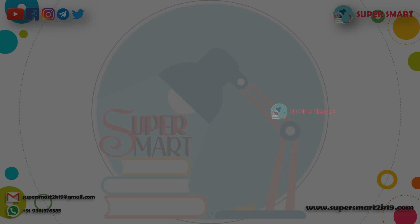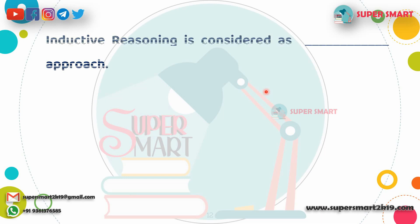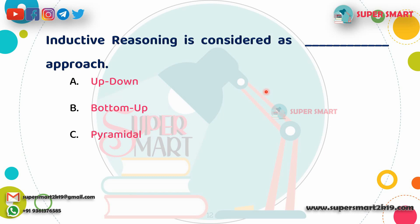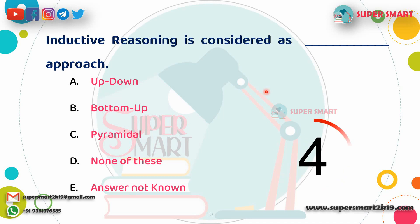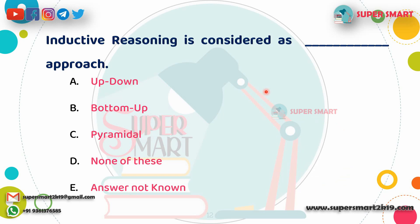The best guess is the best conclusion we can make. Next question: Inductive reasoning is considered as a dash approach — bottom to up, up to down, primordial, or none of these. Answer: Bottom-to-up (down to up).